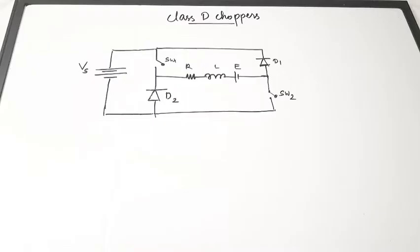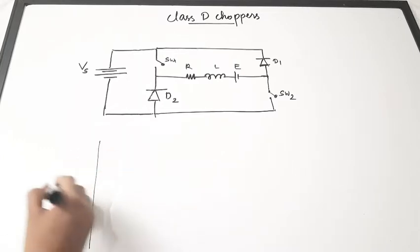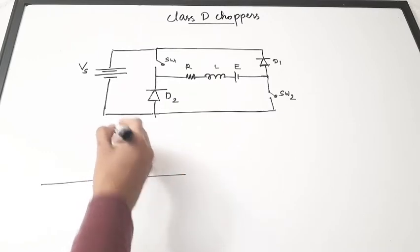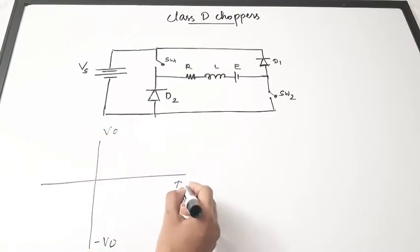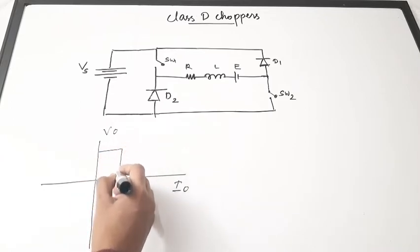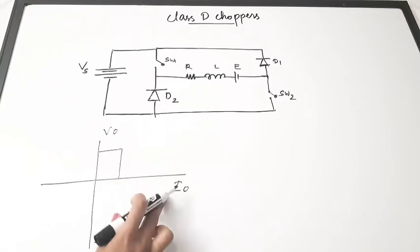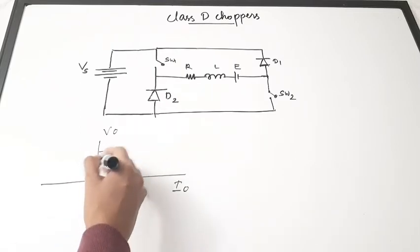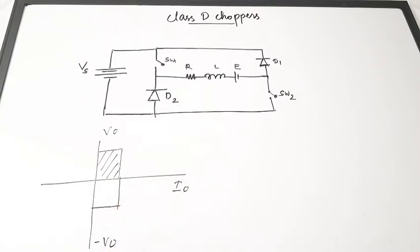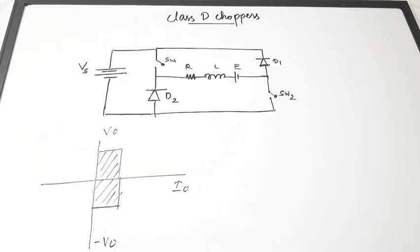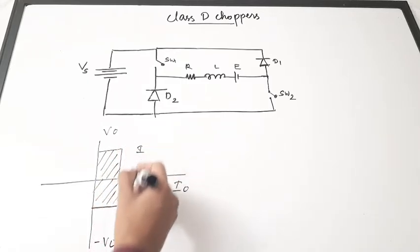In this video we are going to discuss about the class D chopper. The class D chopper has operation in the first and fourth quadrant. In the first quadrant the output voltage and output current are both positive, and in the fourth quadrant the output voltage is negative but the output current is positive. So the class D chopper produces an output where current is always positive but voltage can be positive or negative.